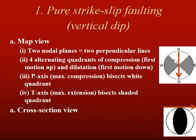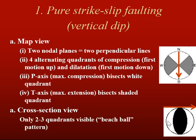In cross-sectional view, taking a section from north to south, it shows only two quadrants visible now, and it has a beach ball pattern to it. We're looking at the back hemisphere going from north to south, so we see some white here and some black there. This is what a strike-slip fault looks like in cross-sectional view.